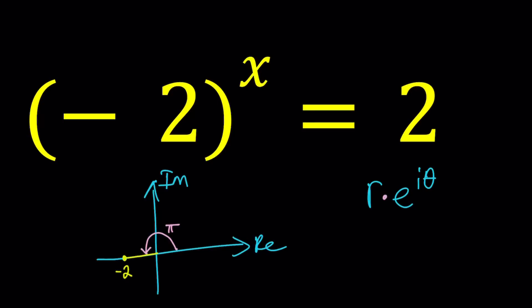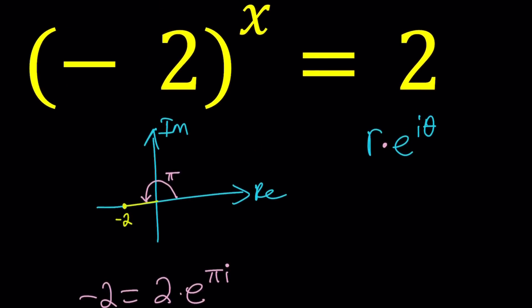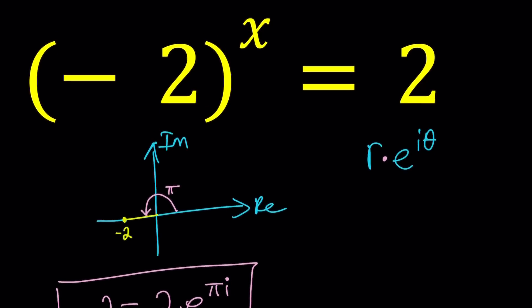So, we can go ahead and write our number negative 2 as follows: r, which is 2, times e to the power pi i. It doesn't matter. Same thing, right? What about the right-hand side? The right-hand side has a 2. Now, we're going to raise this number, and this is only one of the branches, obviously. You can come up with infinitely many branches, because it's kind of like a complex exponentiation. But, x will basically take care of all the solutions.